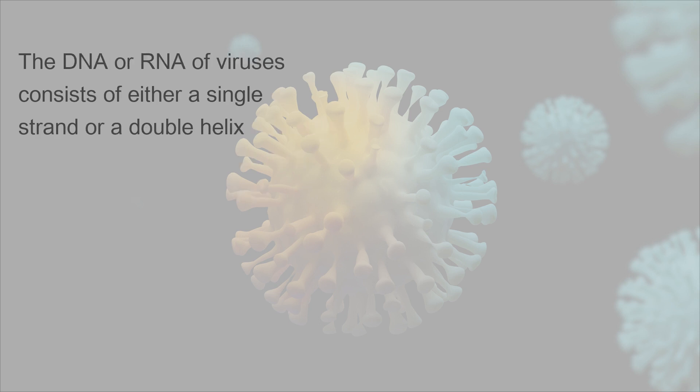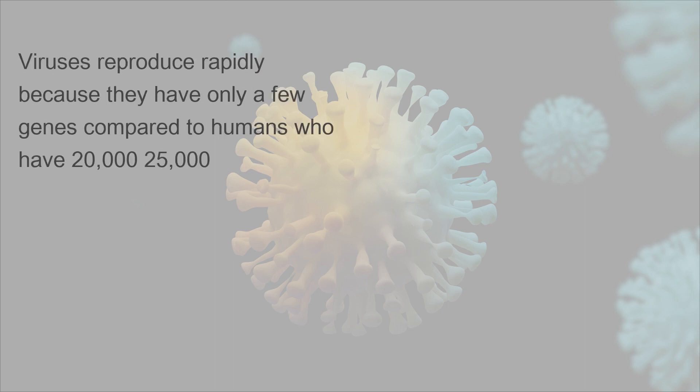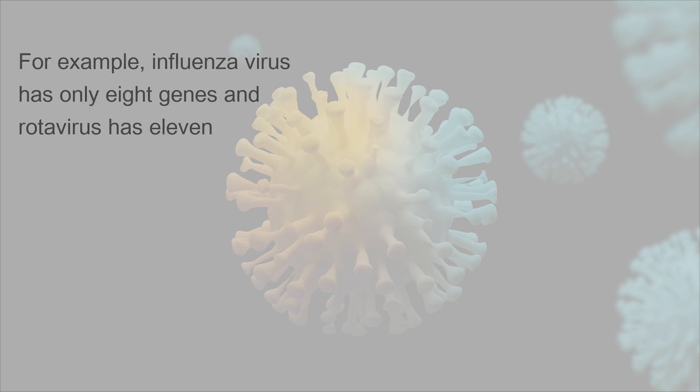The DNA or RNA of viruses consists of either a single strand or a double helix. Viruses reproduce rapidly because they have only a few genes, compared to humans, who have 20,000-25,000. For example, influenza virus has only 8 genes and rotavirus has 11.